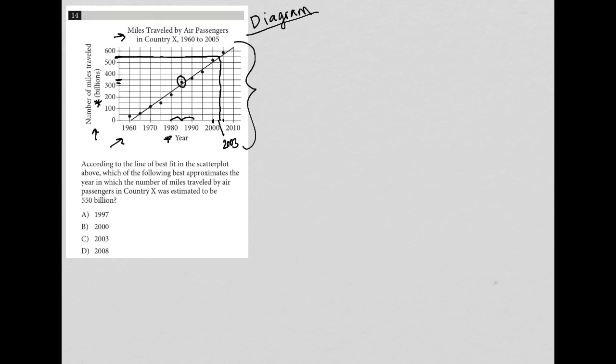Then I go to my answer choices, and I see that I actually have 2003, and there is no other option that even remotely is close. 1997, definitely not. 2000 is over here, so that's not lining up. 2008 will be way over here, so that's also not lining up. So my answer must be 2003.